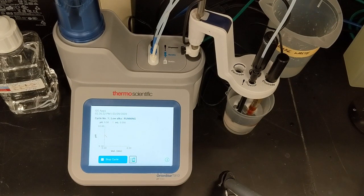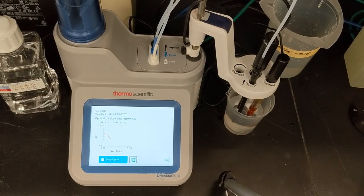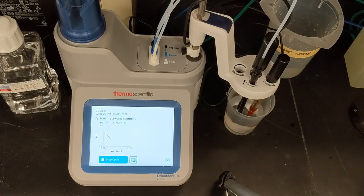The process continues until the titrator senses the two programmed endpoints at pH 4.5 and 4.2 and ends the titration. Then I can calculate the low-level alkalinity according to Standard Methods 2320 Section 5b.